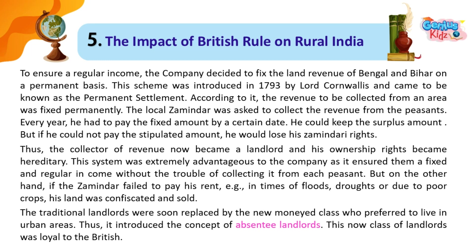To ensure a regular income, the company decided to fix the land revenue of Bengal and Bihar on a permanent basis. This scheme was introduced in 1793 by Lord Cornwallis and came to be known as the Permanent Settlement. According to it, the revenue to be collected from an area was fixed permanently. The local zamindar was asked to collect the revenue from the peasants.